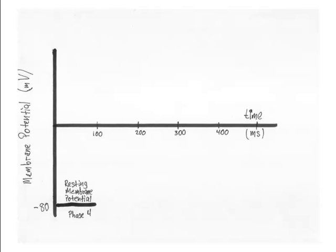To draw an action potential, first show the resting membrane potential, which is at minus 80 millivolts. Don't forget to label the axis showing this value. This part of the action potential is often referred to as phase four.